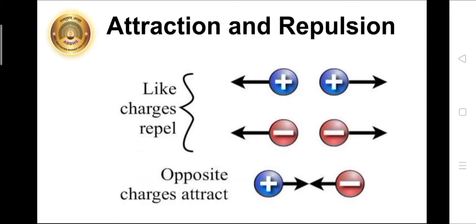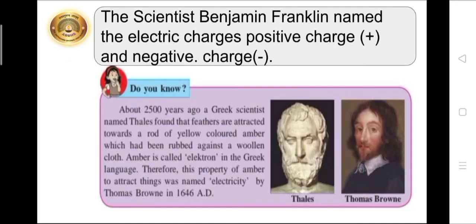So we learn from the first experiment that like charges repel or move away from each other. This is called repulsion. And we learn from the second experiment that unlike charges attract each other. This is known as attraction. The scientist Benjamin Franklin named the electric charges positive charge and negative charge.